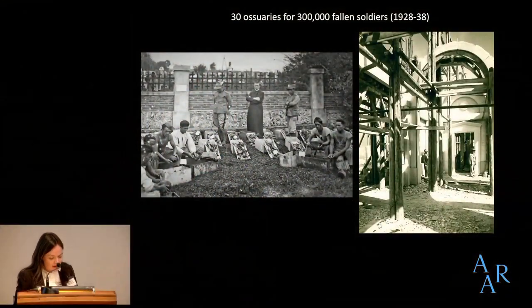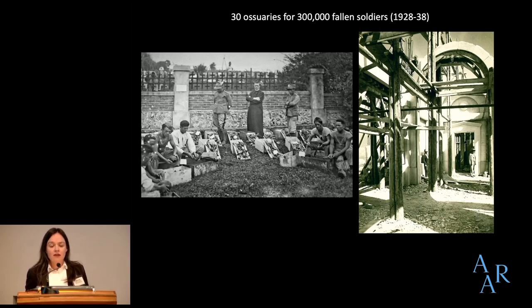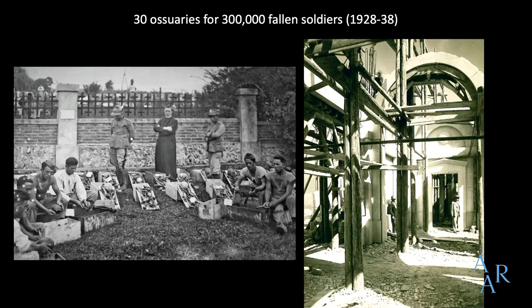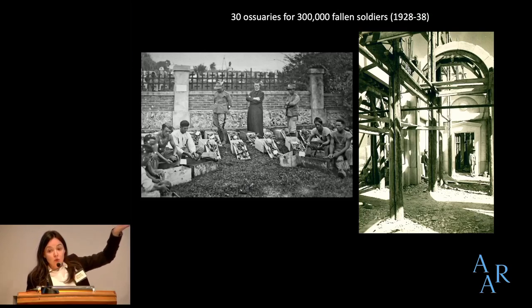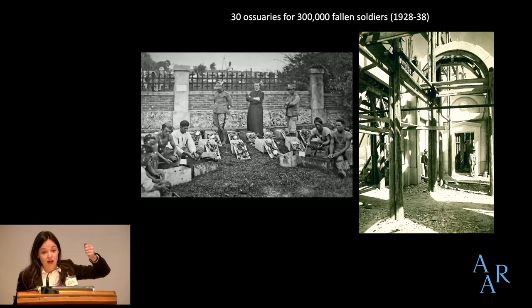Originally, Italian soldiers who died during the First World War were buried in mass graves or in local cemeteries close to the battlefields. But in 1928, Mussolini decided to exhume and rebury the bodies of over 300,000 Italian soldiers who had died in battle. The bodies were disinterred, placed in small boxes marked by tags under the surveillance of a priest, and moved to new ossuaries. Roughly 30 new ossuaries were built along the former front lines in northeastern Italy and in present-day Slovenia.